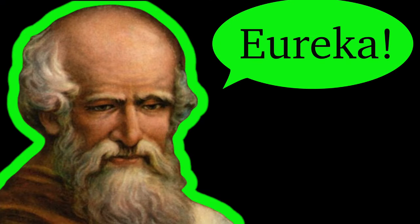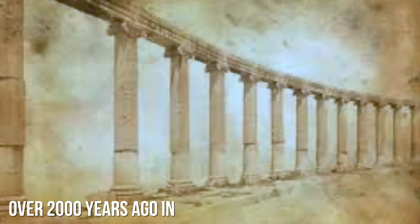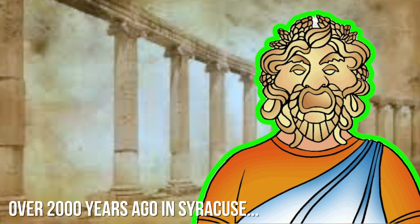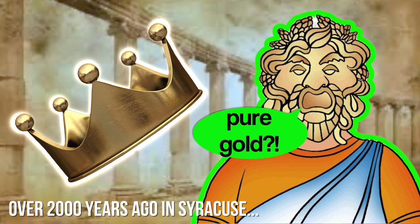So what is the famous Eureka story of Archimedes? Over 2,000 years ago in Syracuse, King Hiero II suspected that a solid gold crown he ordered was partly made of silver. The king asked Archimedes to determine whether or not the crown was pure gold without destroying the crown.